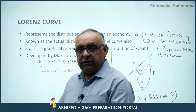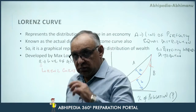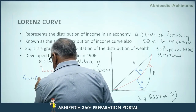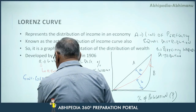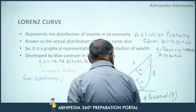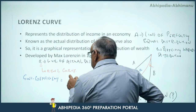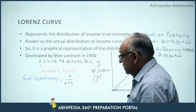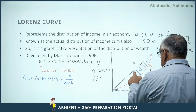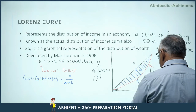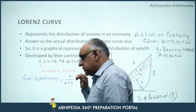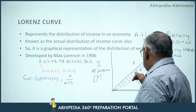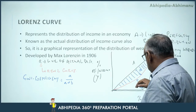On this basis, we can define the Gini Coefficient in mathematical form. The Gini Coefficient is equal to a divided by (a + b), where 'a' is the area between the line of perfectly equal distribution and the Lorenz Curve, and (a + b) is the entire area below the line of perfectly equal distribution.